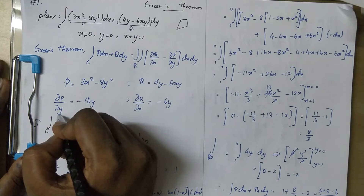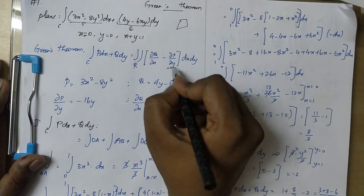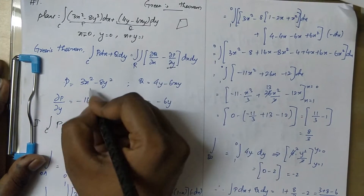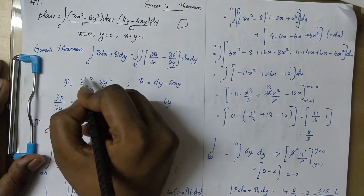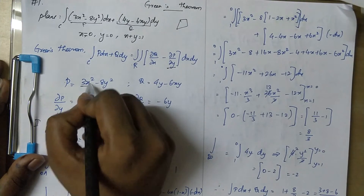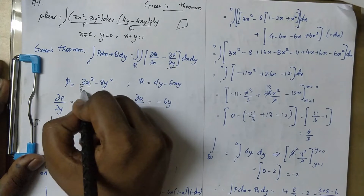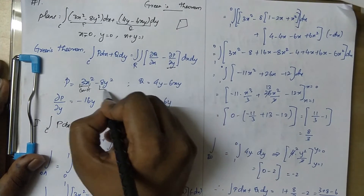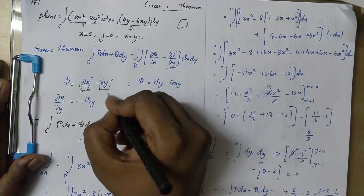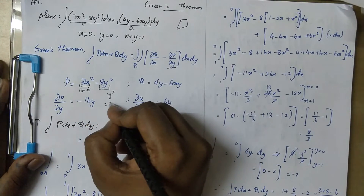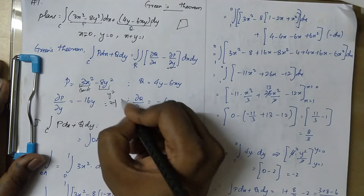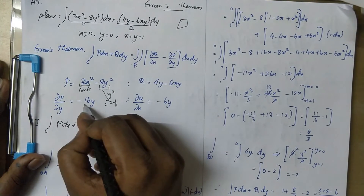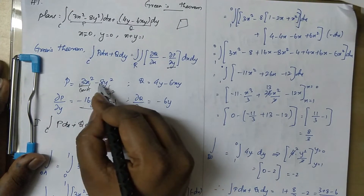P will be differentiated partially with respect to y. So dou P by dou y — differentiate with respect to y and treat the rest as constant. So y square differentiated gives 2y, and 8 into 2 is 16.